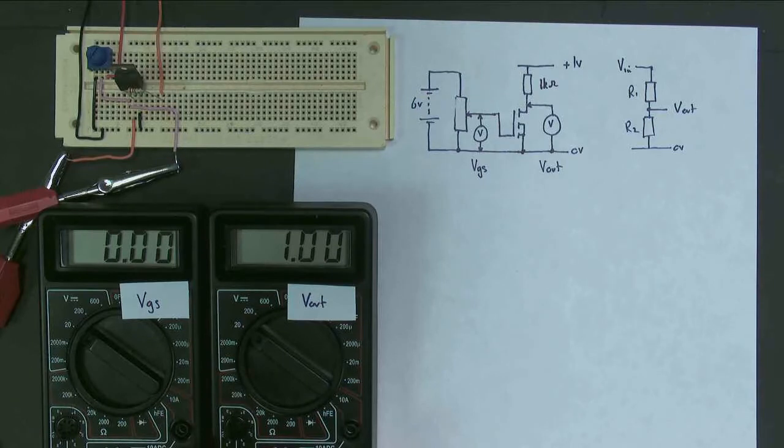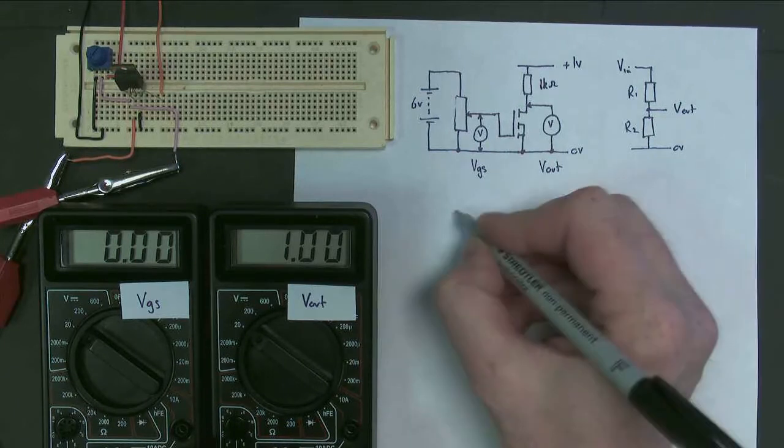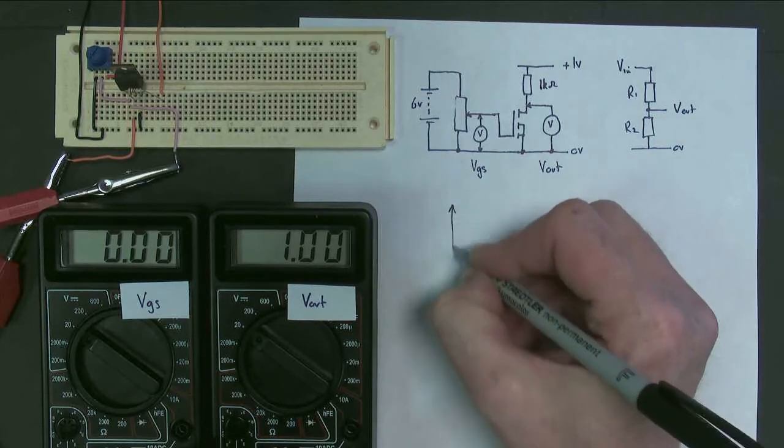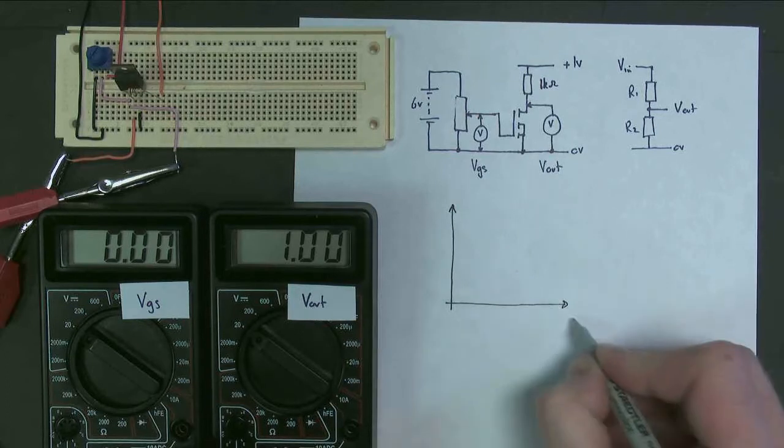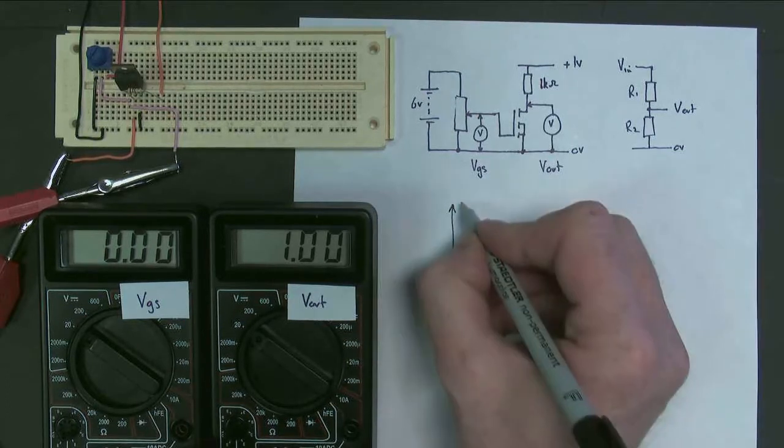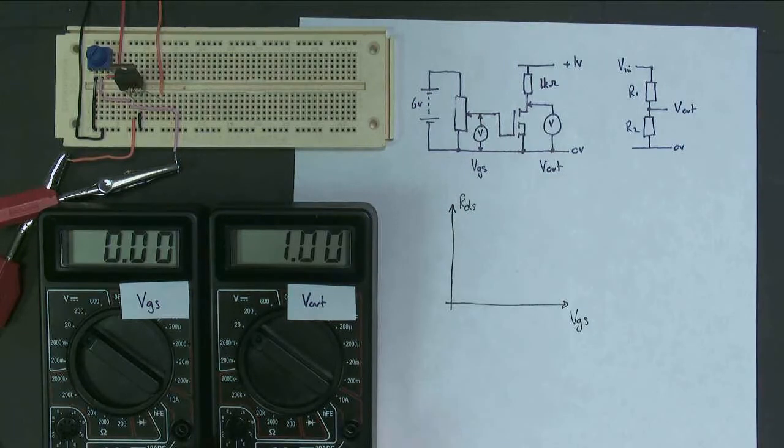Now, before we do that, I'm going to take some values and I'm going to try and draw a graph of, well, what? Well, this time I'm going to try and draw a graph of the gate source voltage versus R, the resistance of the drain and the source. And I'm not drawing a quantitative graph like I did in my other videos. I'm just drawing a little qualitative graph. So let's have a play and see what happens.